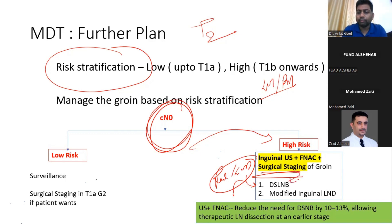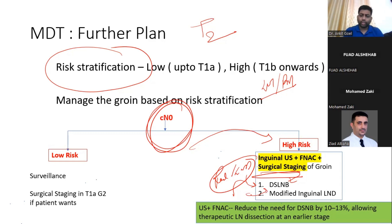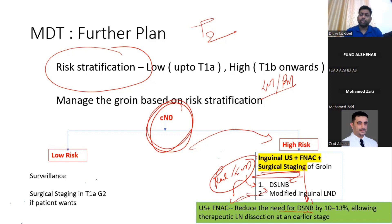The next plan is inguinal ultrasound, FNSE, and surgical staging in the form of a dynamic sentinel lymph node biopsy. If you don't have the facility for a dynamic sentinel lymph node biopsy, you do a modified inguinal lymph node dissection. The purpose of the inguinal ultrasound and FNSE is that it reduces the need for dynamic sentinel lymph node biopsy by 10 to 13 percent.